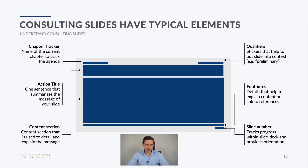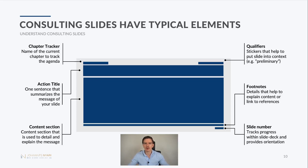What you typically have at the top is a chapter tracker. In my slide that you see now here, it's 'understand consulting slides,' shown in gray. You could typically include it also at the top of the slide. It's typically exactly the same wording that you have in the agenda. This helps the audience — if they left the meeting for a couple of minutes and come back, this chapter tracker helps them with one glance to quickly understand where we are in the presentation.